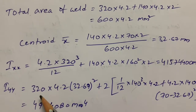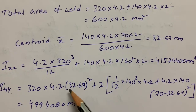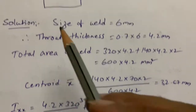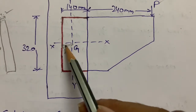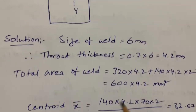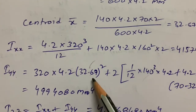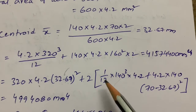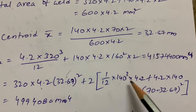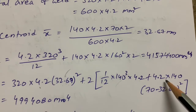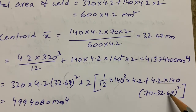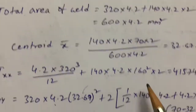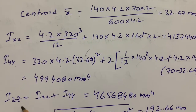For Iyy, we use bd³/12 + A·yc². We calculate: 320 × 4.2 × 32.67² plus 2 × (140³ × 4.2/12 + 4.2 × 140 × (70 − 32.67)²). Here 32.67 is the centroid distance already calculated, and 70 is half of 140. This gives us the Iyy value.